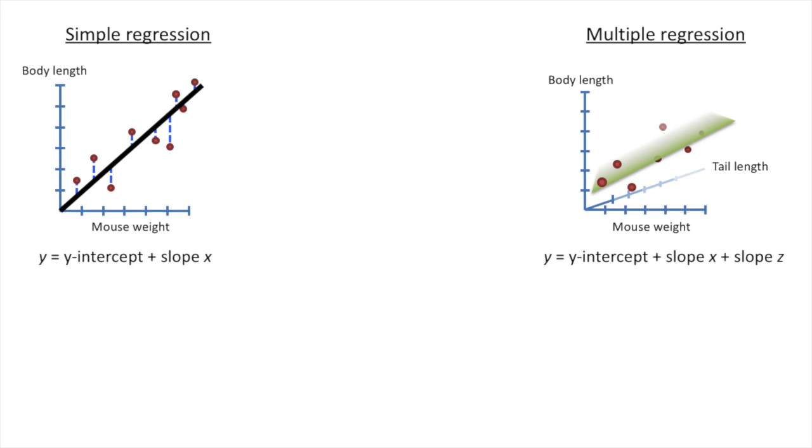In the previous example, all that meant was that instead of just modeling body length by mouse weight, we modeled body length using mouse weight and tail length. If we added additional factors like the amount of food eaten or the amount of time spent running on a wheel, well, those would be considered additional dimensions, but they're really just additional pieces of data that we can add to our fancy equation.